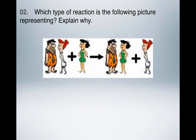Next up, I've got Fred, Wilma, and Betty. You can see that Fred and Betty get together on this side of the arrow, and now Wilma is left by herself. Which type of reaction do you think this represents?